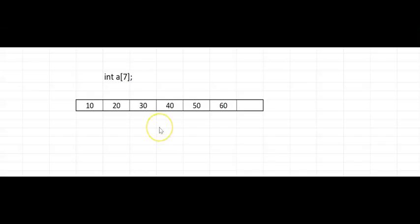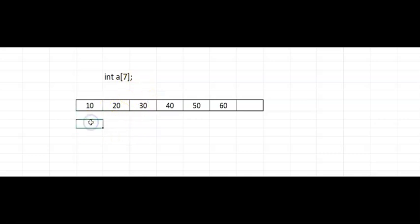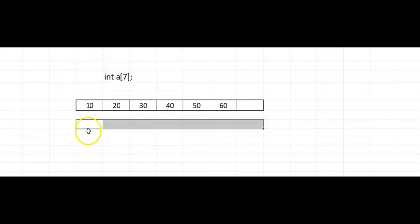Let's look at an integer array having seven elements: 10, 20, 30, 40, 50, 60, and the last element is empty. If I want to insert 70, I can easily add it at the end. But what if I want to insert 25 between 20 and 30? Ideally, I want the list to look like: 10, 20, 25, 30, 40, 50, 60. In an array, it is very difficult to insert an element in the middle.